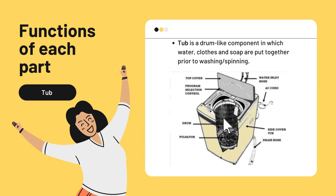The last part is the tub. The tub is the drum-like component in which water, clothes, and soap are put together prior to washing or spinning.